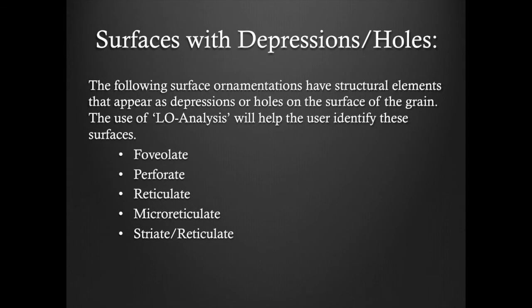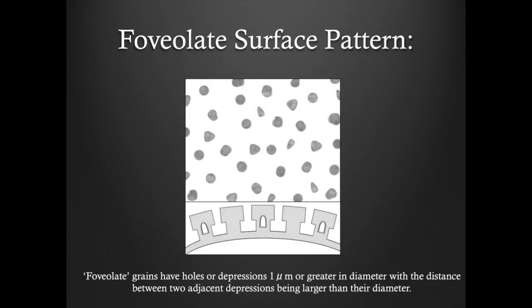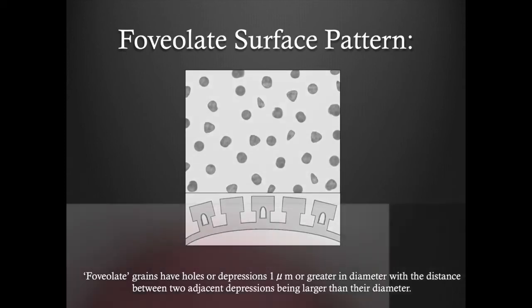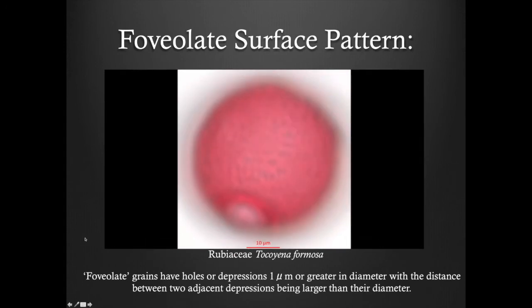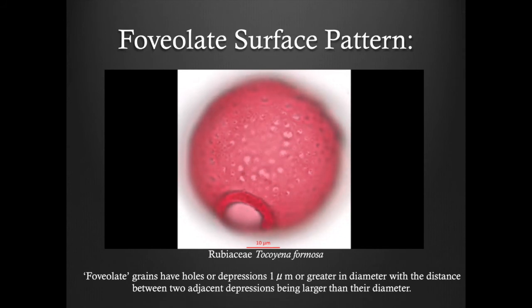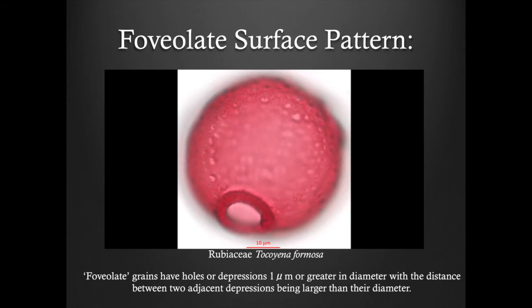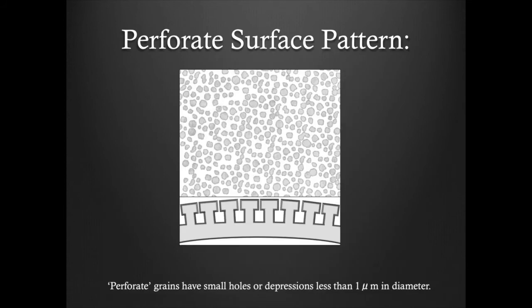The following surface ornamentations have structural elements that appear as depressions or holes on the surface of the grain. The use of LO analysis will help the user identify these surfaces. Foveolate grains have holes or depressions one micrometer or greater in diameter, with the distance between two adjacent depressions being larger than their diameter. Perforate grains have small holes or depressions that are less than one micrometer in diameter.